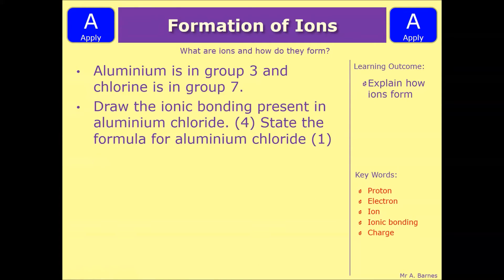Okay, let's have a look at a practice question then. So this says aluminium is in group three and chlorine is in group seven. Draw the ionic bonding present in aluminium chloride. State the formula for aluminium chloride as well. So that's five marks in total. Pause the video, have a go, and we'll see how much you've picked up so far.